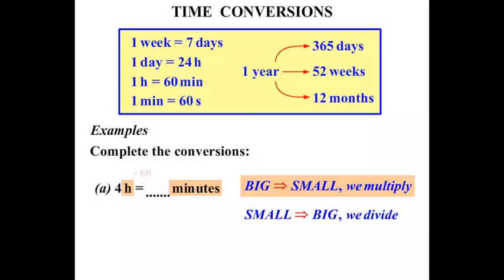So we multiply by that 60. So we have 4 times 60 is 240. So 4 hours equals 240 minutes.